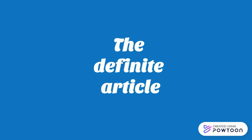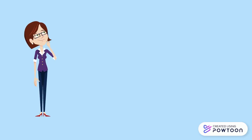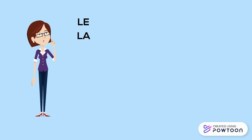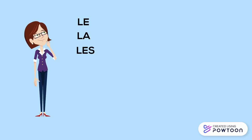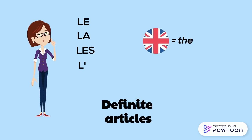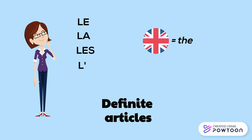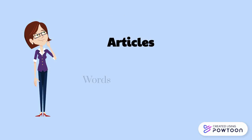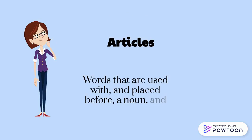The definite article. You have probably noticed that nouns in French are often preceded by le, la, les, or sometimes l'apostrophe. All these words correspond to the English 'the'. There are definite articles — words that are used with and placed before a noun and restrict its meaning.